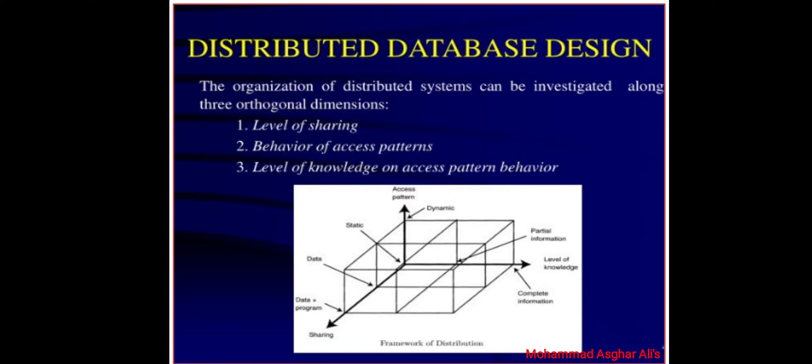In terms of the level of sharing, there are three possibilities. First, there is no sharing: each application and its data execute at one site and there is no communication with any other programs or access to any data files on other sites. This characterized the very early days of networking and is probably not very common today. We then find the level of data sharing, where all the programs are replicated at all the sites but data files are not.